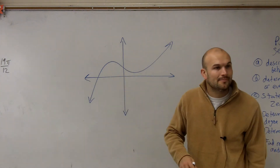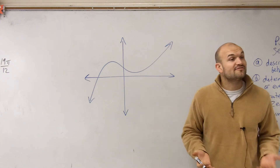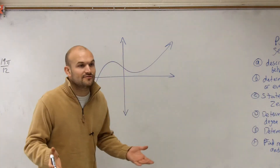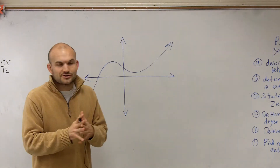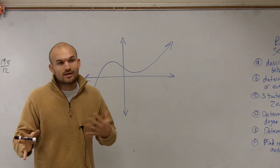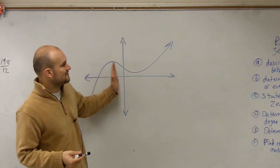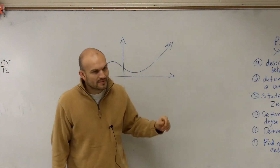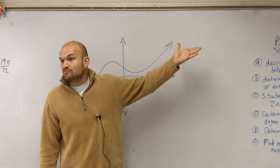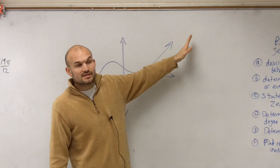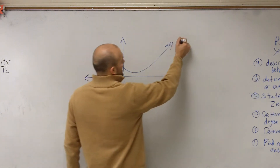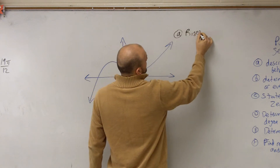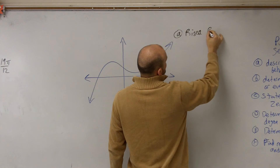So when looking at this problem, what they want us to do is find the end behavior. We're going to find the end behavior — let's just look at it first, do the general way, and then we'll write it mathematically. What I notice is as this graph is going over to the right, you can see that the graph is rising, and the graph is going to continue rising to the right. So what we could say for A is the graph rises to the right.